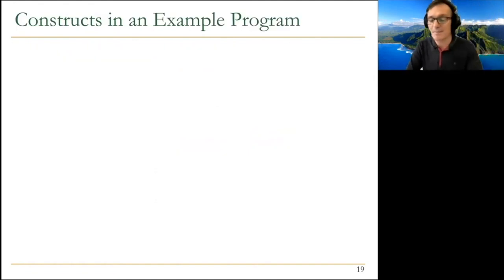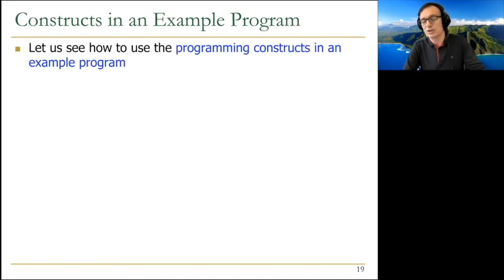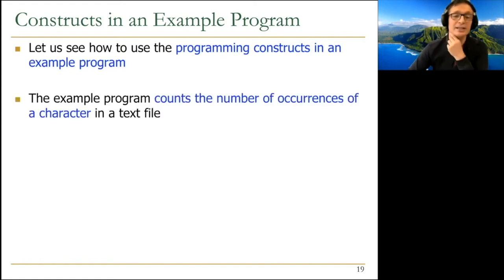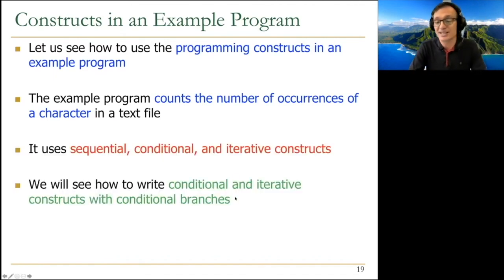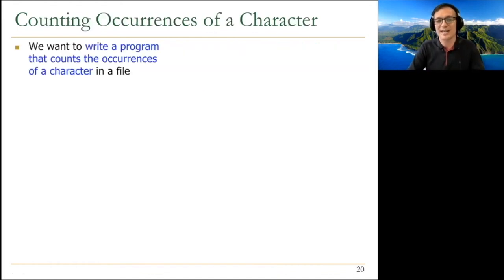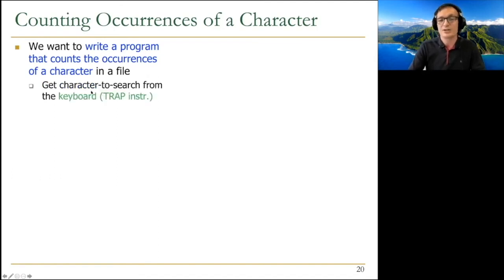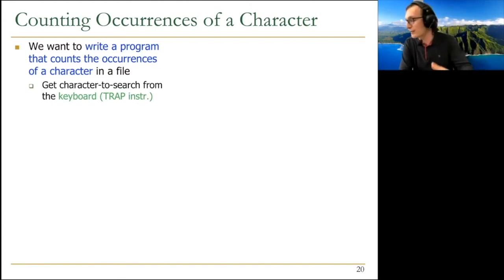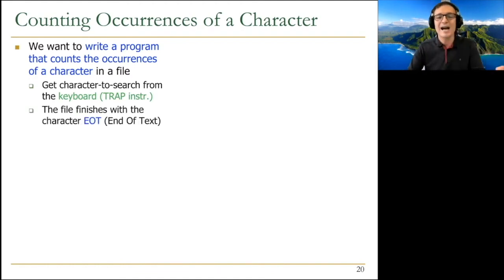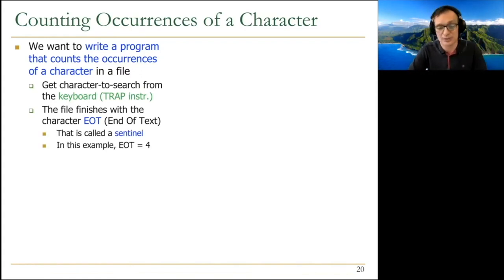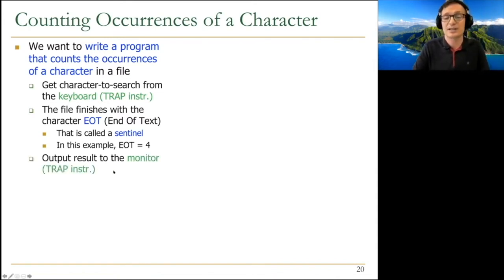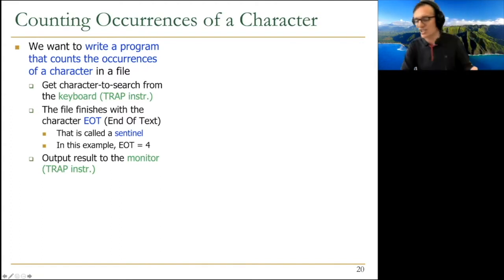Let's look at an example program that counts the number of occurrences of a character in a text file. It uses all three constructs: sequential, conditional, and iterative. We'll get the character to search from the keyboard using a trap instruction. The file finishes with the sentinel character end-of-text, EOT, which is set to 4 in this example. The output result will be placed on the monitor using another trap instruction.